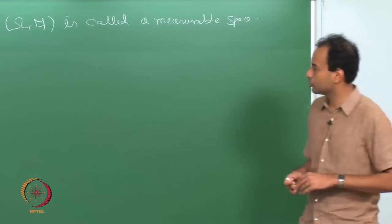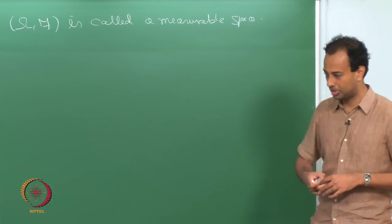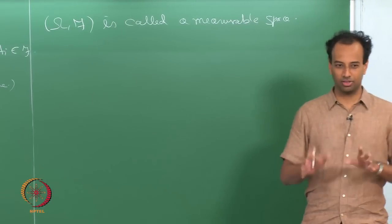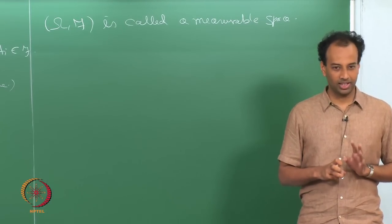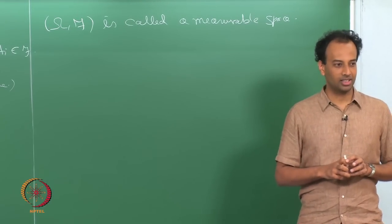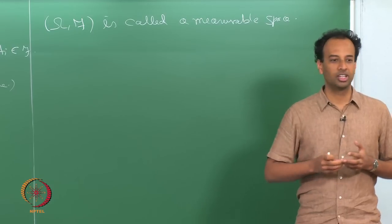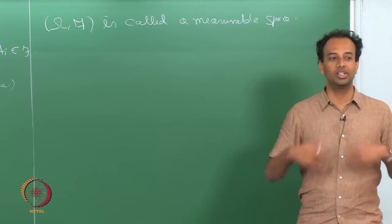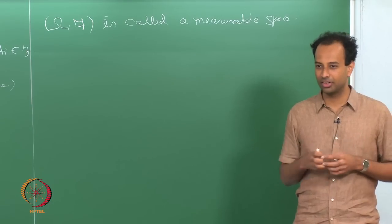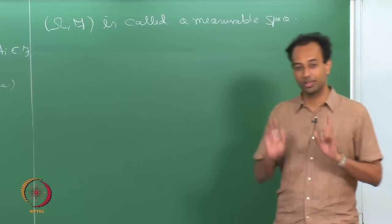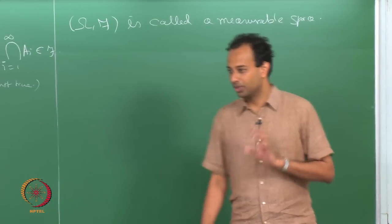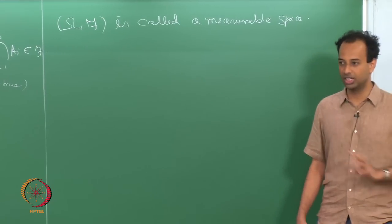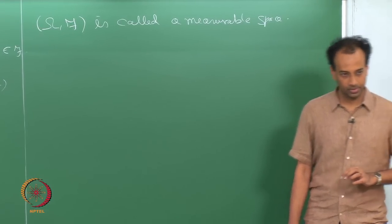One thing you should know about probability theory is that it is actually just a special case of measure theory, and probabilities are simply special cases of measures. This is why some people say 'probability measure' rather than just 'probability.' A probability measure is a special case of a mathematical concept called a measure, which we will define very soon.